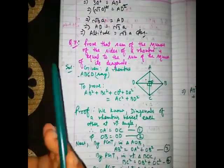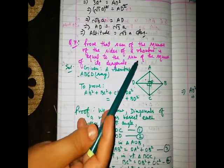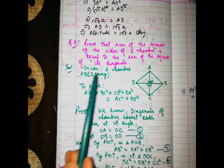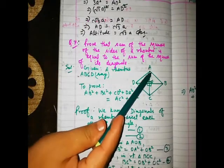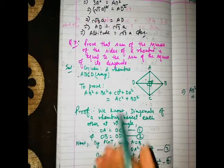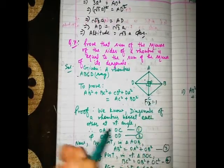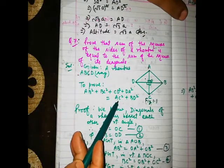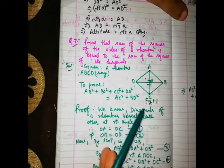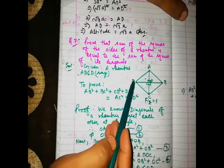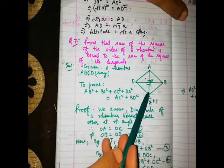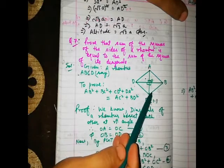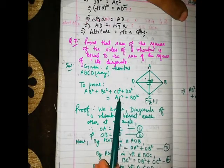Now question number 7: Prove that the sum of the squares of the sides of a rhombus is equal to the sum of the squares of its diagonals. That is, AB² + BC² + CD² + DA² equals AC² + BD².